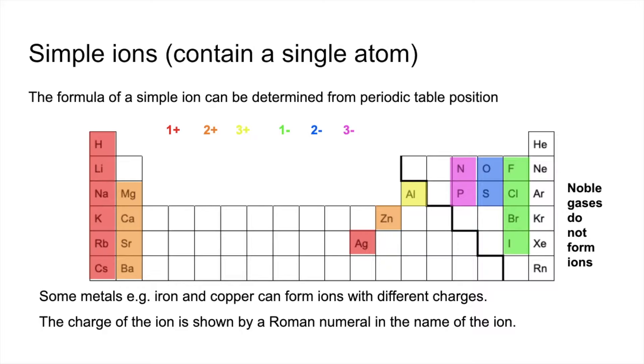So the charge of the ion is shown by a Roman numeral in the name of the ion. For example, lithium doesn't need a Roman numeral. It wouldn't be lithium Roman 1, because lithium only forms a 1 plus ion. However, copper you can see there. That's copper with a Roman 1 is the Cu plus or Cu1 plus ion. Copper with a Roman 2 is the Cu2 plus ion.